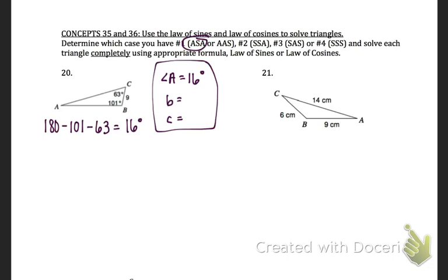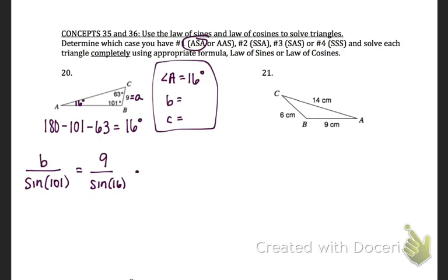Next, I'm going to solve for side B or side C. Remember that sides are across from their angles, so where the side equals 9, that's actually side a. To solve for side B, I put B over sine of angle B equals side a (which is 9) over sine of angle A (which is 16). I multiply sine of 101 over to the other side and get 32.1.